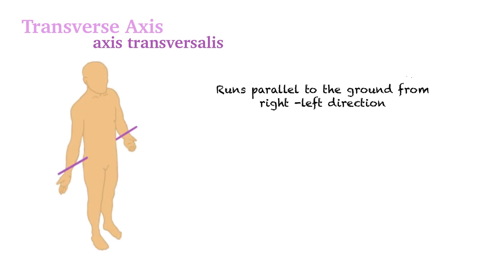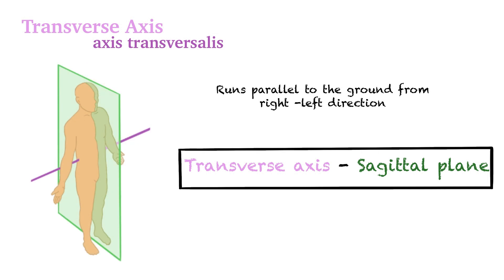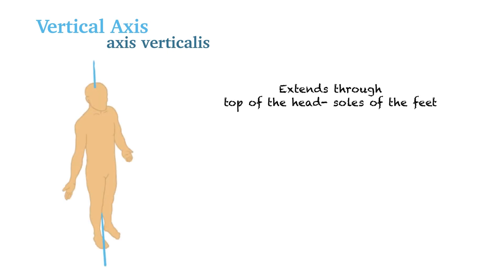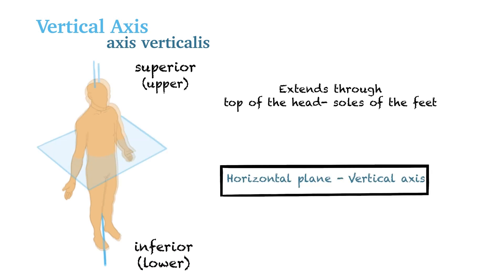The transverse axis, also known as axis transversalis in Latin, is an imaginary line that runs parallel to the ground from right (dexter) to left (sinister) of the body. This axis passes through the sagittal plane — keep in mind: transverse axis and sagittal plane go together. The vertical axis, also known as axis verticalis in Latin, is an imaginary line extending from the top of the head to the middle of the soles of the feet, perpendicular to the ground, passing in the superior and inferior direction. This axis passes through the horizontal plane — vertical axis and horizontal plane go together.